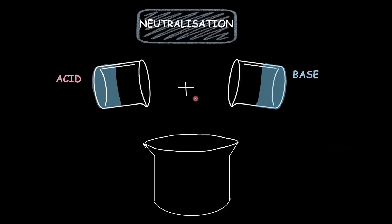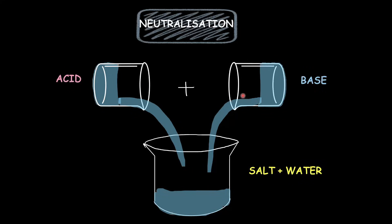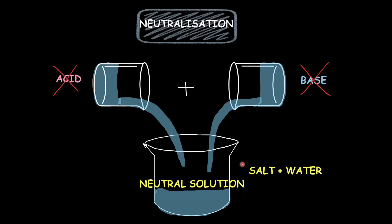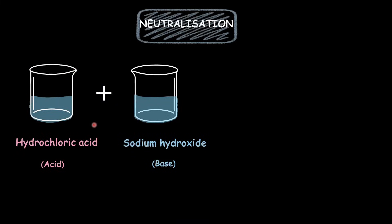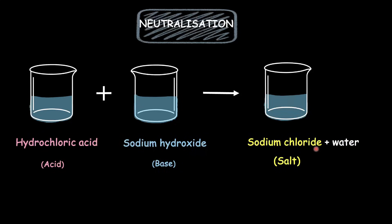So when we mix an acid with a base in the right amounts, they tend to neutralize each other's effects, giving us salt and water. If this mixing cancels both the acidic and the basic properties entirely, we would end up getting a neutral solution — a solution that is neither acidic nor basic. For example, in the neutralization reaction of hydrochloric acid and sodium hydroxide, we end up getting a neutral solution of sodium chloride and water. Note that neutralization is a hot reaction — it produces a lot of heat, so wear protective gloves and work under the teacher's supervision.